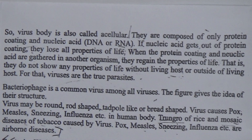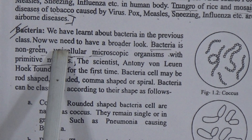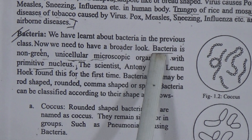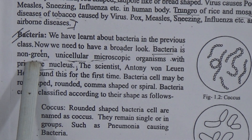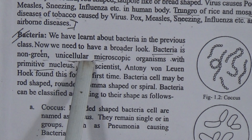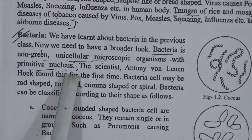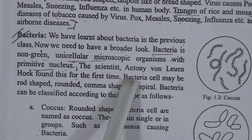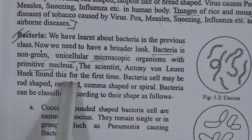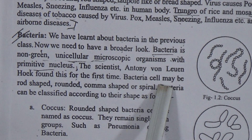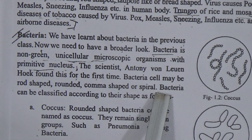Now, bacteria. We have learned about bacteria in the previous class, but now we need to have a broader view. Bacteria are non-green — that means they are not green in color. Bacteria are non-green, unicellular microscopic organisms with a primitive nucleus. The scientist Antony Van Leeuwenhoek found these for the first time. Bacteria cells may be round shape, comma shape, or spiral shape.